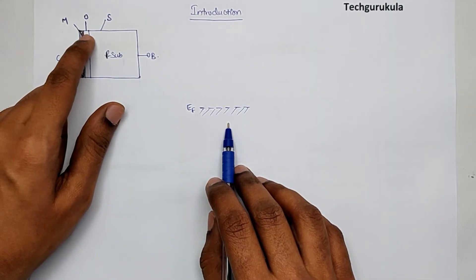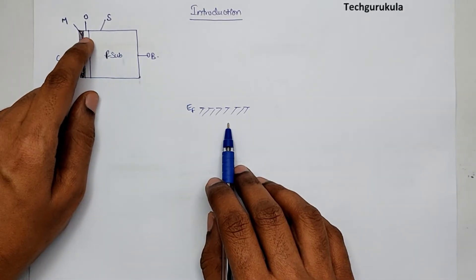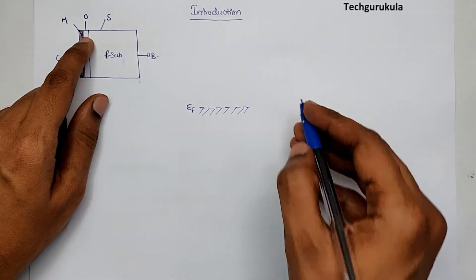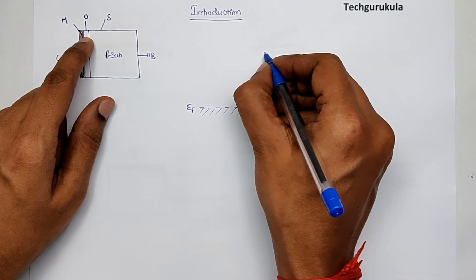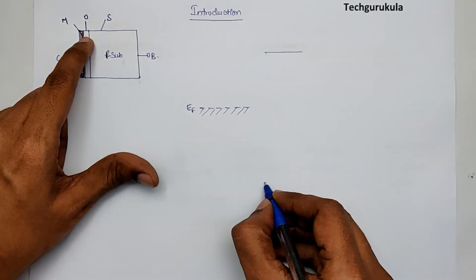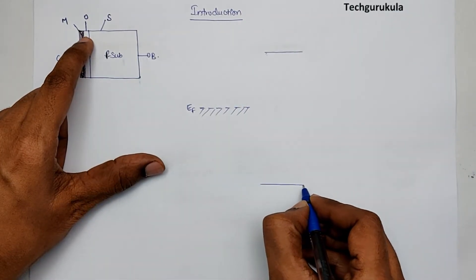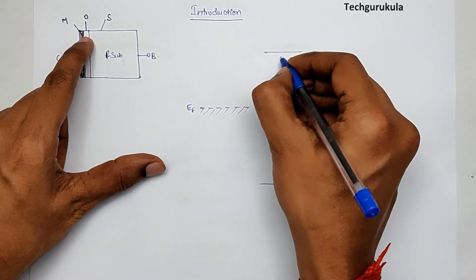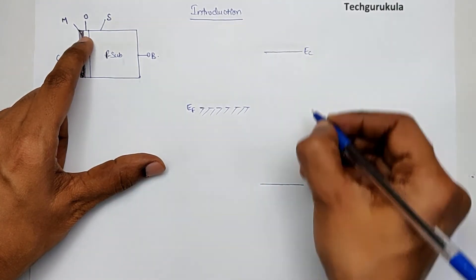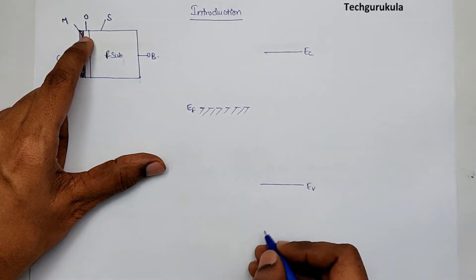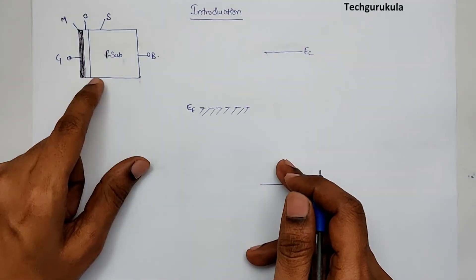For the oxide, which is an insulator, the energy band diagram shows EC and EV with a very large difference between them. The energy gap from EC to EV would be very high because it is an insulator.